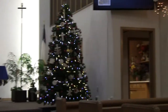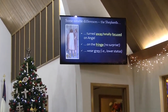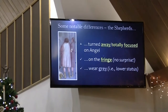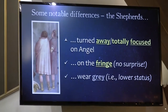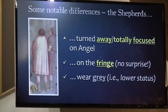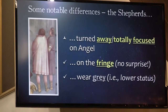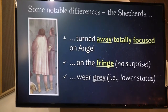Another notable difference is the shepherds tonight. Last week they were in the same basic position — lower right-hand corner — and yet last week we saw their faces. This week they're completely turned away from the action, totally focused on the angel above them. By no surprise, they are on the fringe of the picture. These are not the kinds of guys that polite company would keep. They live on the fringes, literally out in the fields tending their flocks by night. In Renaissance art, they are depicted wearing gray and muted colors because of their lower status in society.